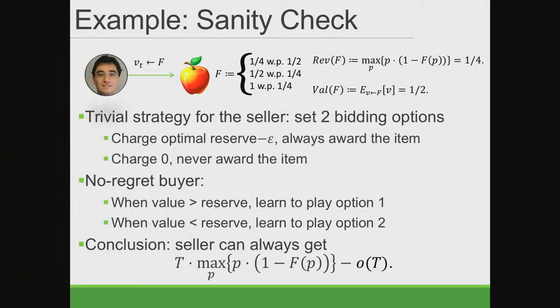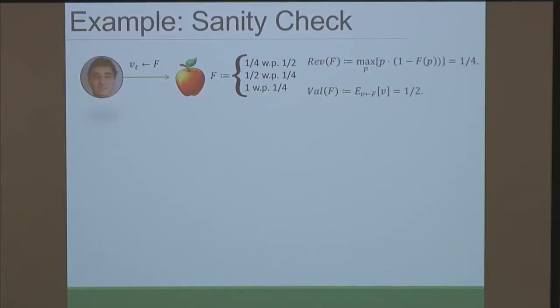Let's illustrate these three theorems with a specific example. The distribution has three values: one-quarter with probability one-half, one-half with probability one-quarter, and one with probability one-quarter. The optimal one-shot revenue is one-quarter — for example, if you sell at price one-half, the buyer pays with probability one-half, giving revenue one-quarter. The expected value of this distribution is one-half, so there's a gap between these two.